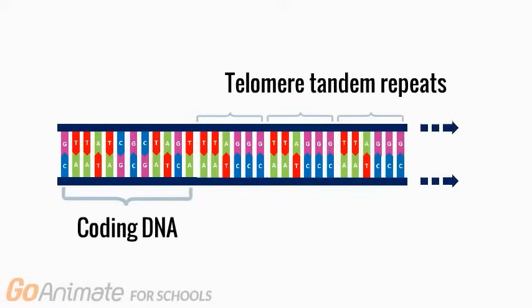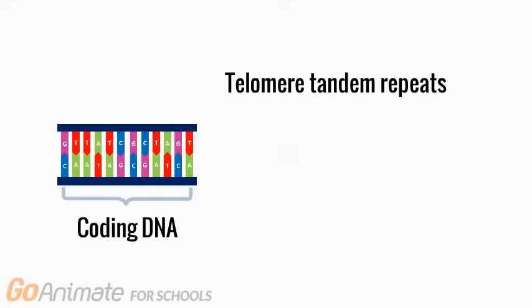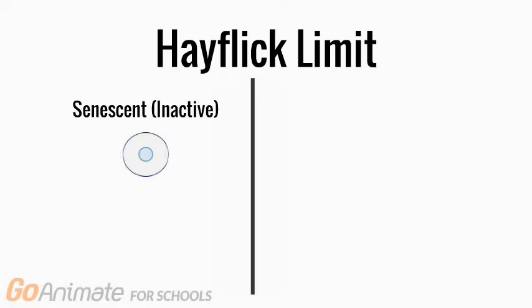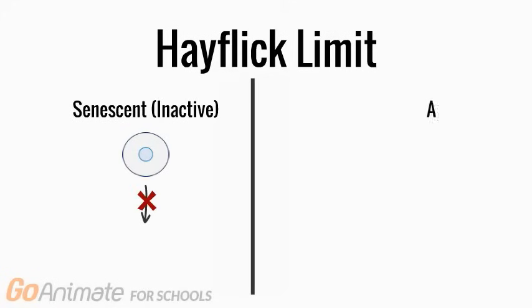As the body continues to replenish itself, DNA synthesis fails to replicate a small amount of DNA at the end of strands. As a result, telomeres become shorter and shorter until cells can no longer divide. They encounter the Hayflick limit and become senescent, or in other words, inactive, or they undergo apoptosis. They die.